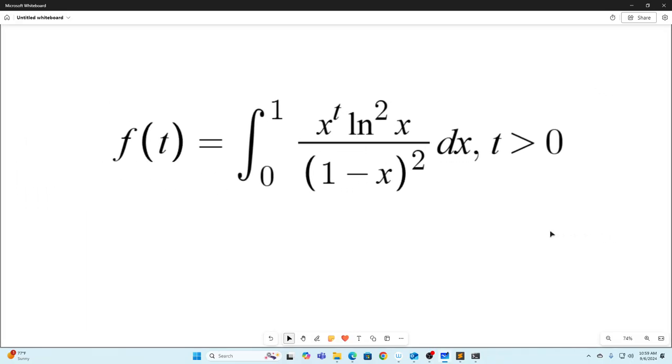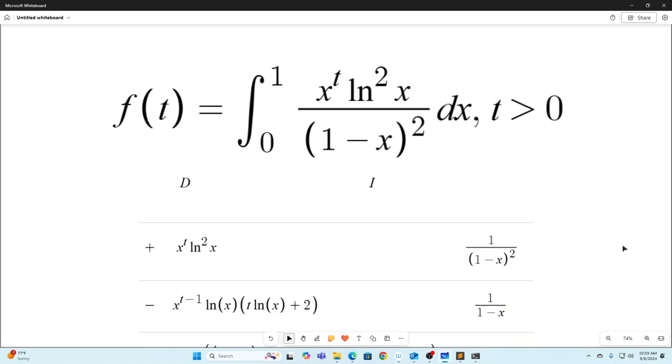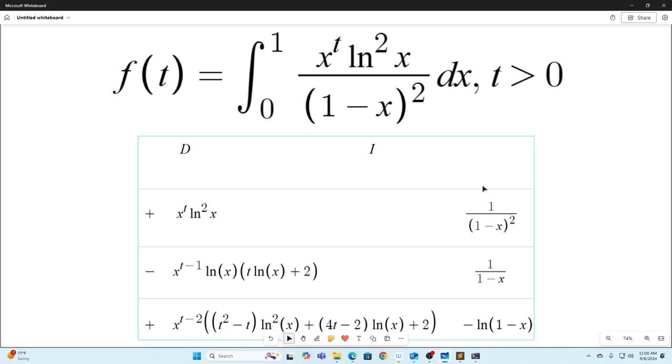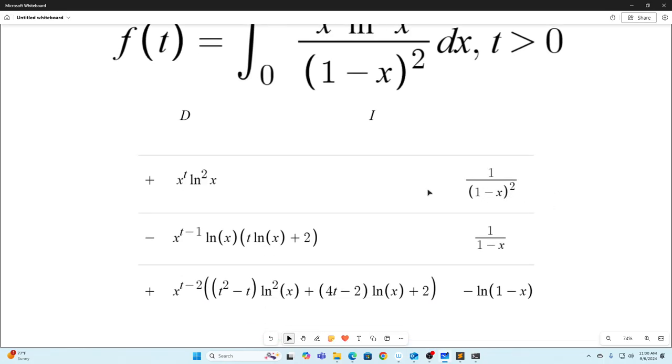So this is our setup and I'm going to be using the tabular method just to make this a little bit quicker. Here's our integration by parts setup, using the tabular method or the DI method as Black Pen Red Pen calls it. So you can see we're taking derivatives of this x to the t natural log squared x and we are integrating 1 over 1 minus x squared. And then you just go all the way down three times. So you're actually doing integration by parts twice technically.